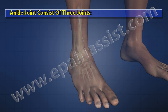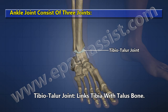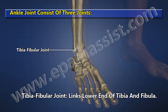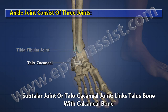The ankle joint consists of three joints. The tibiotalar joint links the tibia with the talus bone. The tibiofibular joint links the lower end of tibia and fibula. The subtalar joint, or the talocalcaneal joint, links the talus bone with the calcaneal bone.